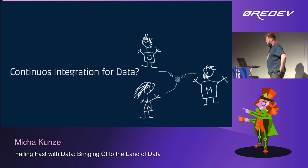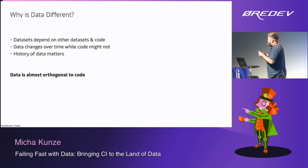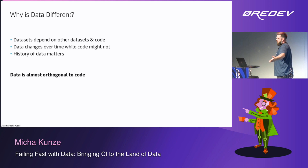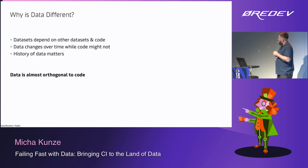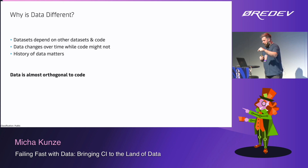How do you do this for data? In data, you have code dependencies that are not the same as data dependencies. Data can change over time, and the history of data matters — we have to build historical datasets for machine learning. We can't just say 'this is the current state of the world.' We need to know how markets have shifted and how customer behavior changed. The whole data flow is orthogonal in a sense, meaning the way you think about iterations is different. The PR and the unit test are not enough for us to actually say this is good or bad.